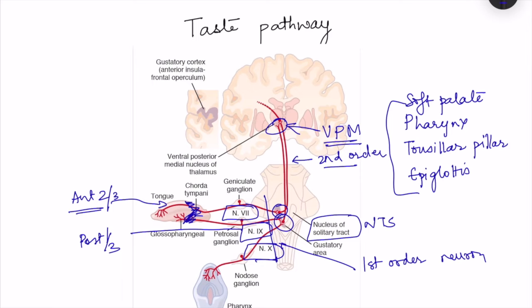From the posteromedial nucleus of the thalamus, the pathway goes to the gustatory cortex, which is located in the parietal cortex — specifically in the gyri of the anterior insula and frontal operculum. This forms the third order neuron, completing the taste pathway.